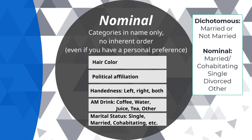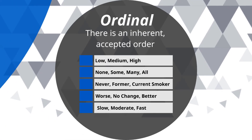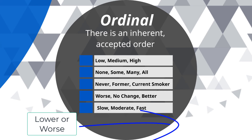Dichotomous has two categories; nominal is a listing of responses with no inherent order. That leads us to ordinal data, where there is an inherent accepted order in the responses — from high to low or worse to better. Examples include: pain level — low, medium, or high; smoking status — never smoker, former smoker, or current smoker; change in pain — worse, unchanged, or better; and speed — slow, moderate, or fast. There is an accepted hierarchy for these responses, which makes them ordinal variables.